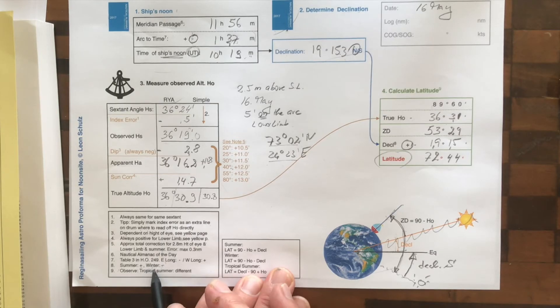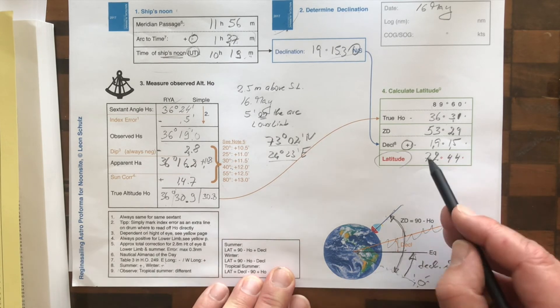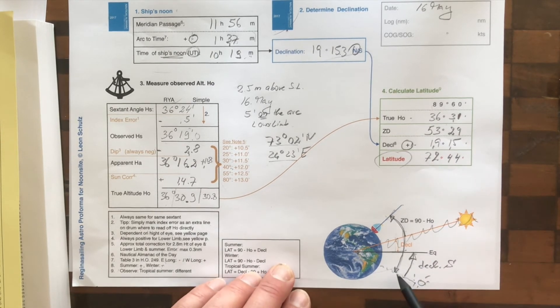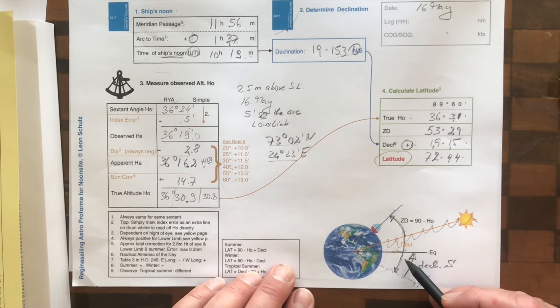And that is why it says minus in winter. So in winter, we have to deduct the declination. And in summer, we have to add the declination.